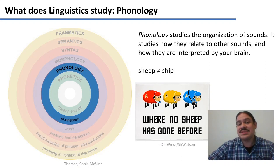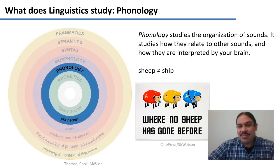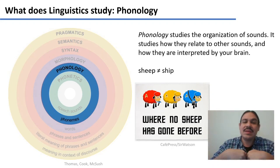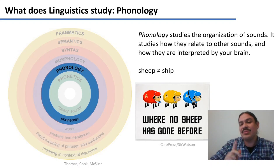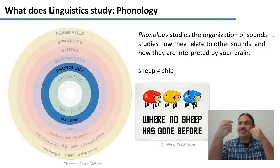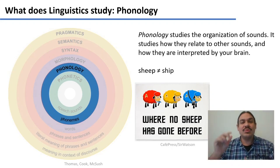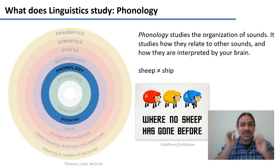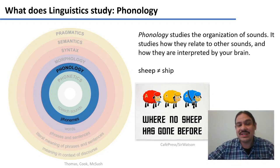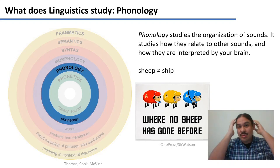Phonology also deals with sound, but it studies the organization of sounds — particularly the organization of sounds in your brain. For example, there are words that are different just by a single sound; we call those minimal pairs. The word 'sheep' and the word 'ship' are different because of that one sound in the middle, the vowel. So phonology studies the relationship of sounds, which sounds make a word change, which sounds don't, and how your brain stores sound information and how all that information interacts. Phonetics studies the production and perception of sound, while phonology studies the mental organization of sounds.